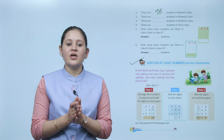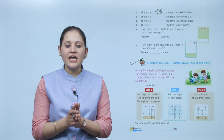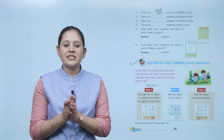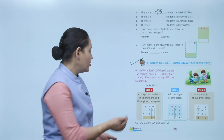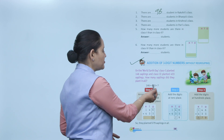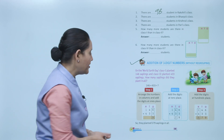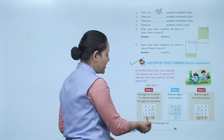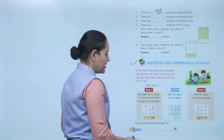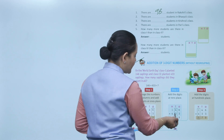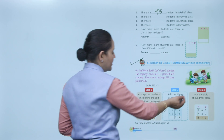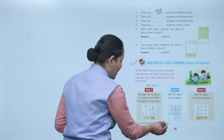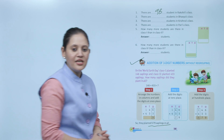On the walls of the class, class 1 planted 146 saplings and class 2 planted 433 saplings. How many saplings did they plant in all? We add 146 plus 433. First, arrange the numbers in columns. Add the ones place: 6+3=9. Add the tens place: 4+3=7. Add the hundreds place: 1+4=5. So they planted 579 saplings in all.